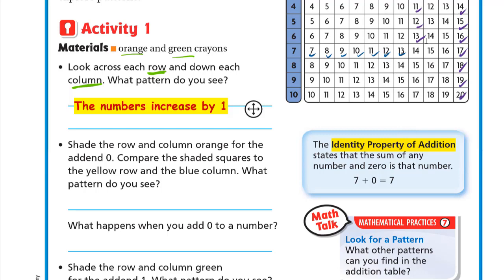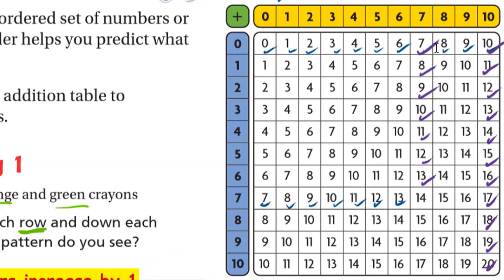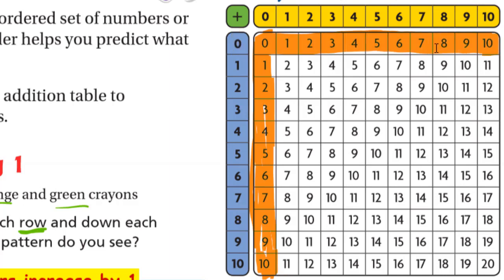Now shade the row and column for addend zero orange. This is the addend zero — we shade its row and column. So we shade the row like this and the column like this for addend zero.